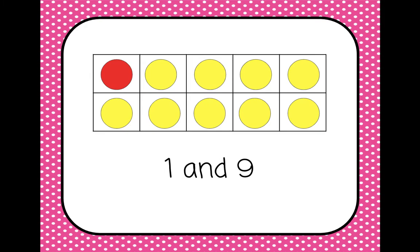We have one red and nine yellow, so one and nine are friendly numbers. And we have zero red and ten yellow, so zero and ten are friendly numbers.